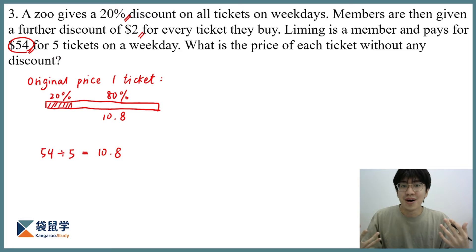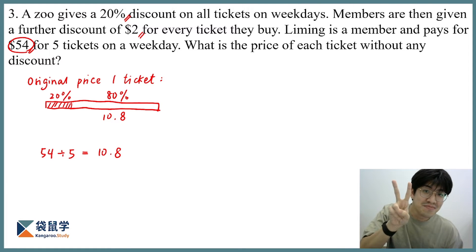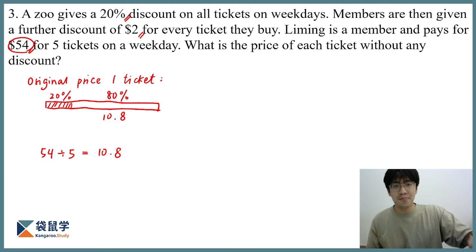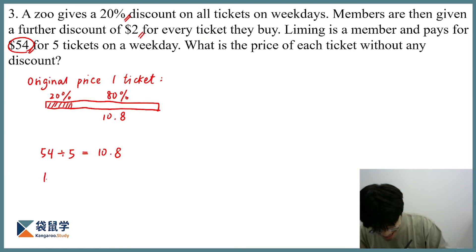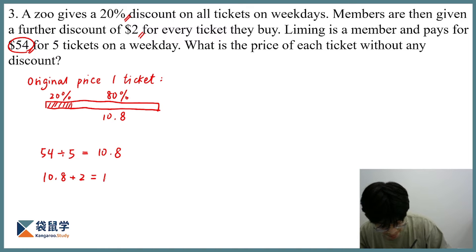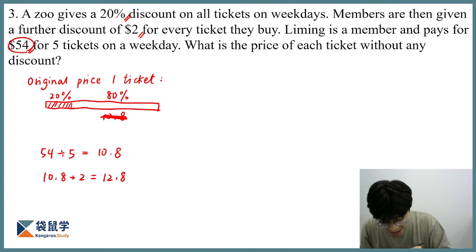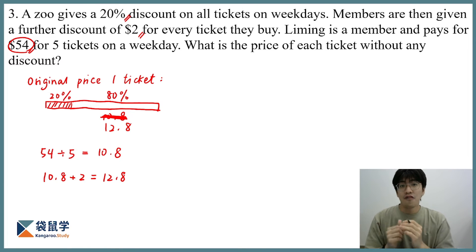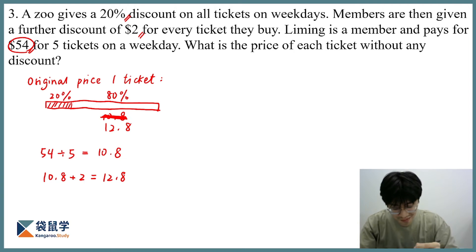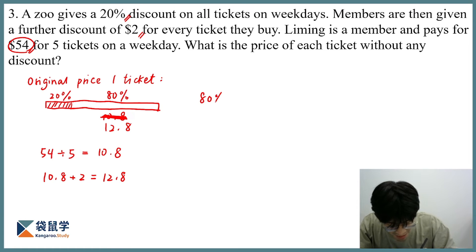We know that as a member, he also gets a further discount of $2. So if the per-ticket amount is 10.8, we take 10.8 plus 2 to get 12.8. Therefore, 12.8 is the price corresponding to 80%.